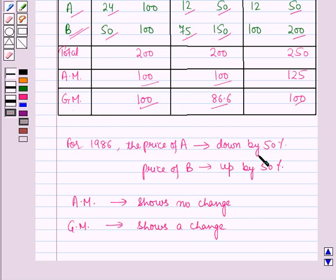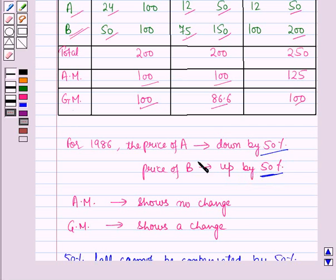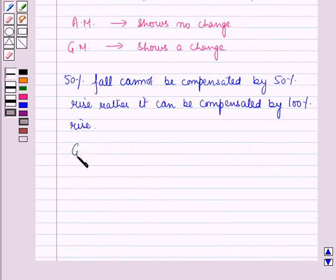A 50% fall cannot be compensated by a 50% rise. Rather, it can be compensated by a 100% rise. This relative change is correctly observed by the geometric mean, but not by the arithmetic mean, which shows no change. So we can conclude that the geometric mean is a better measure.